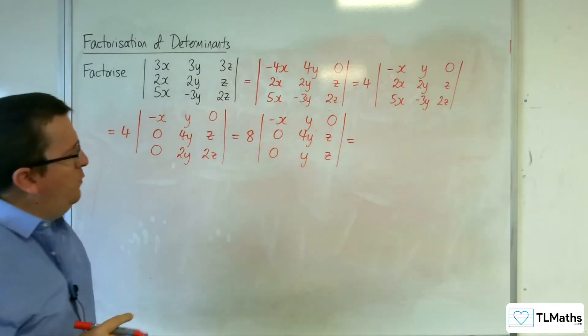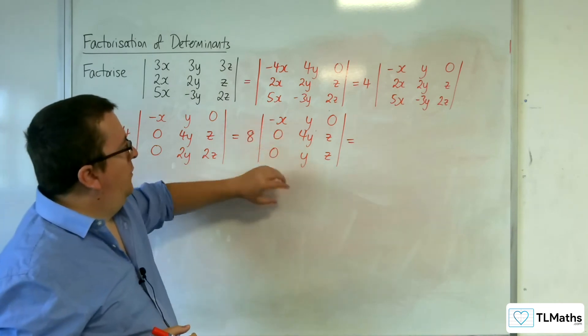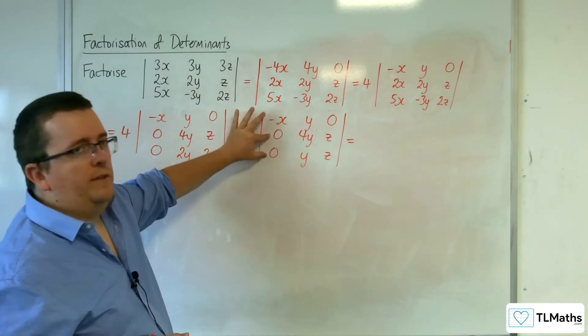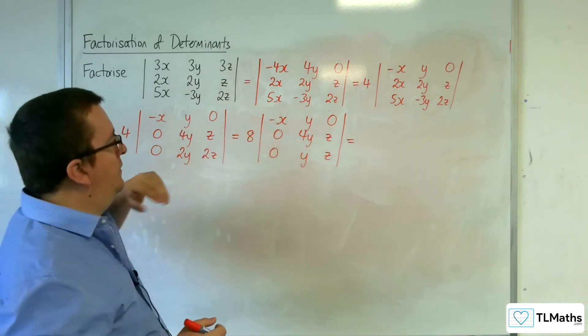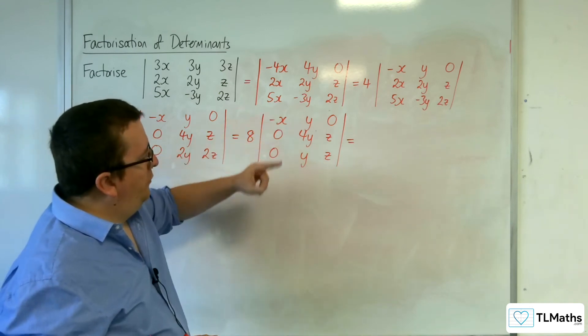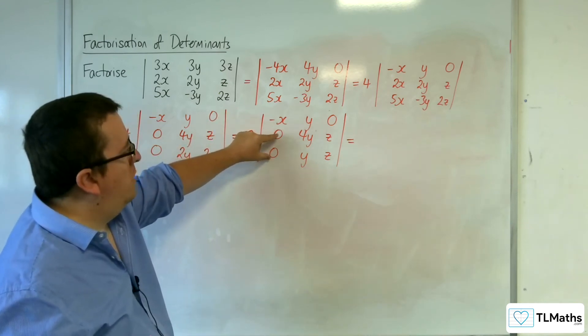So I think what I'll want to do is I'll want to do some kind of subtraction of these two rows, okay, to make my life even easier. What I'll do is I'll just swap those two rows.